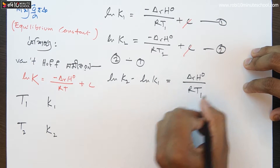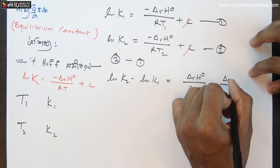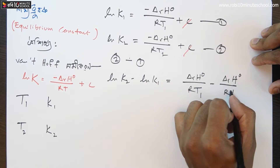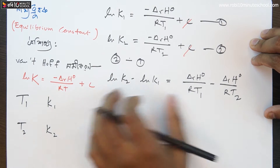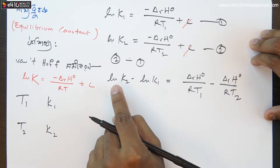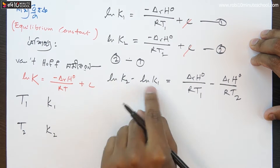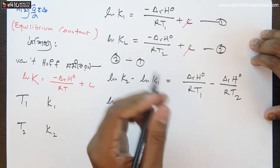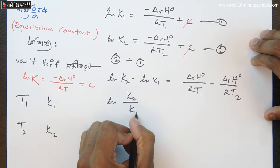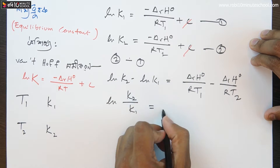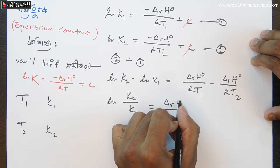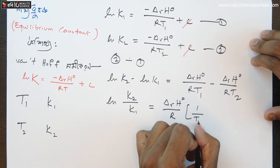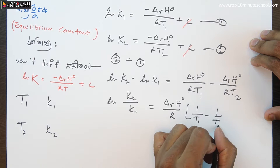...then we get: logarithm of k2 minus logarithm of k1 equals negative delta H over R·T1 minus negative delta H over R·T2. Since log m minus log n equals log(m/n), we get: log(k2/k1) equals delta H over R, taking common delta H over R, times (1/T1 minus 1/T2).